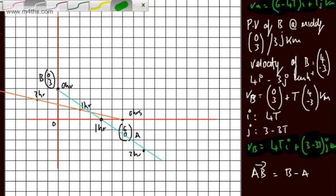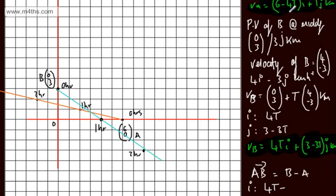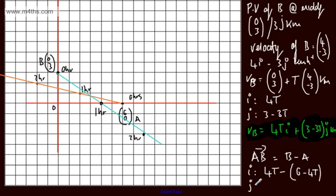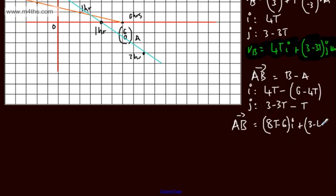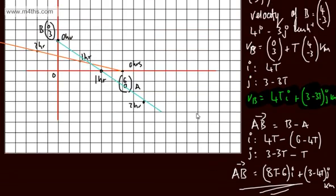Considering the i components: 4t minus (6 minus 4t) gives 8t minus 6. For the j components: (3 minus 3t) minus t gives 3 minus 4t. Therefore, vector AB equals (8t minus 6)i plus (3 minus 4t)j kilometres. That is B relative to A at time t.